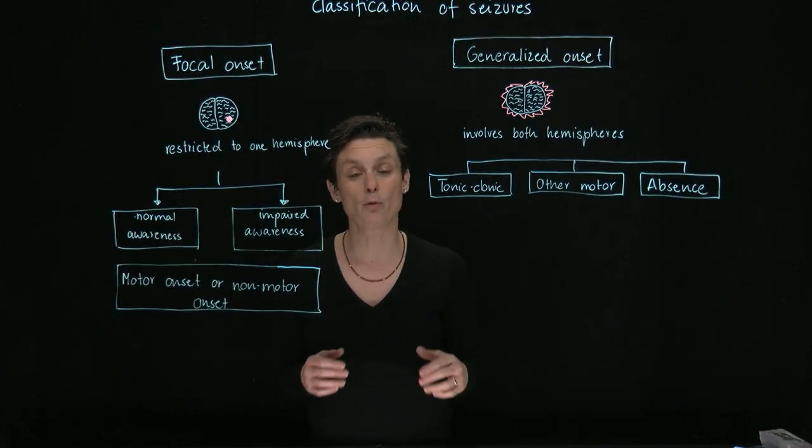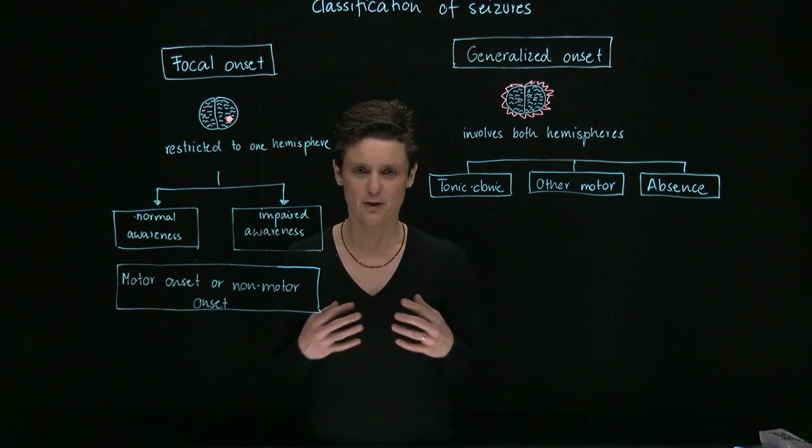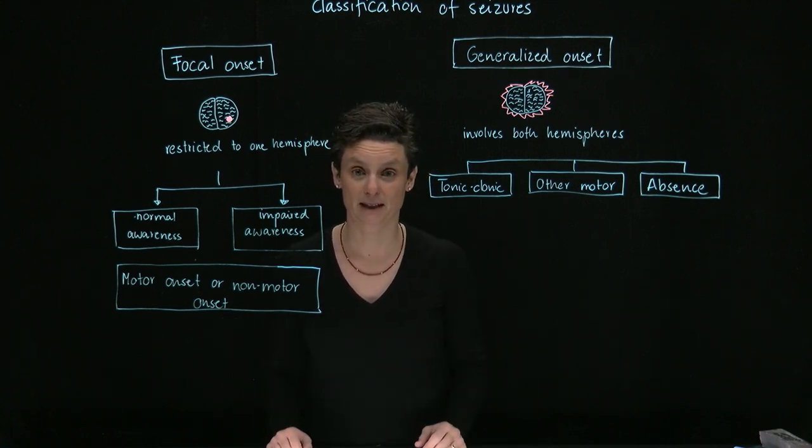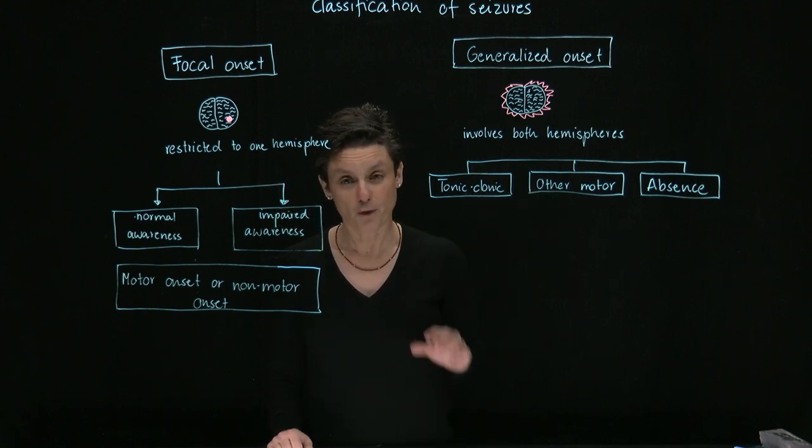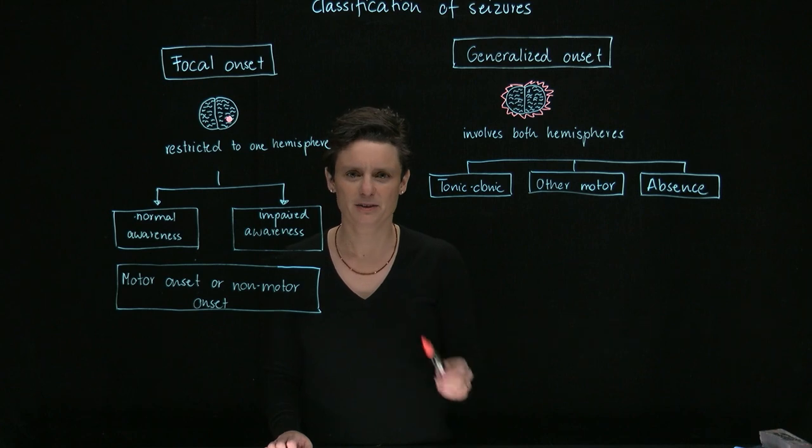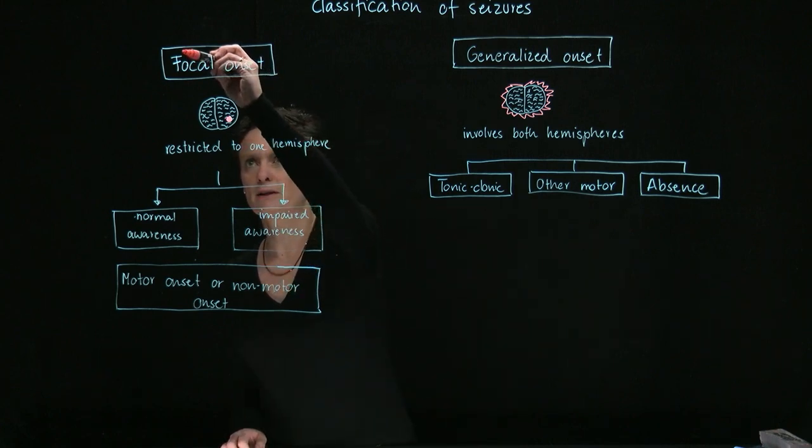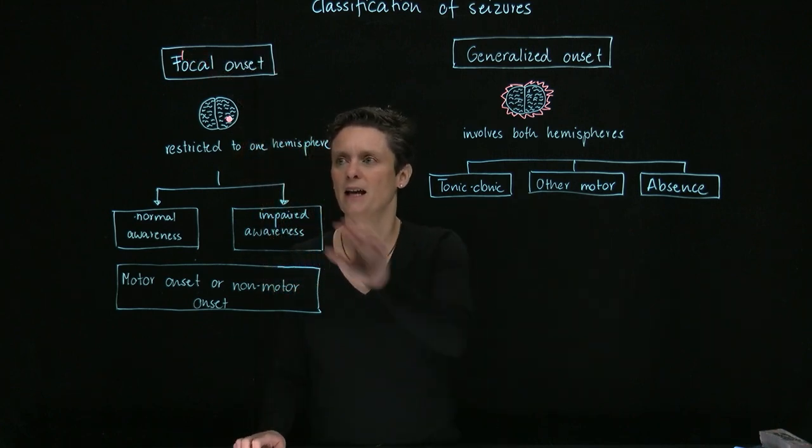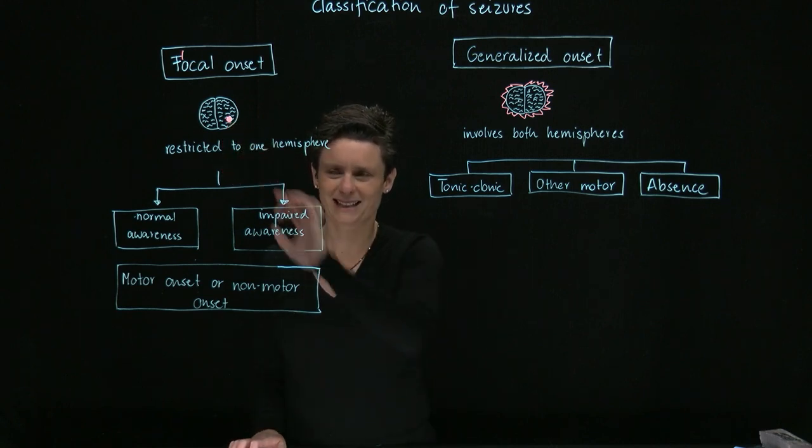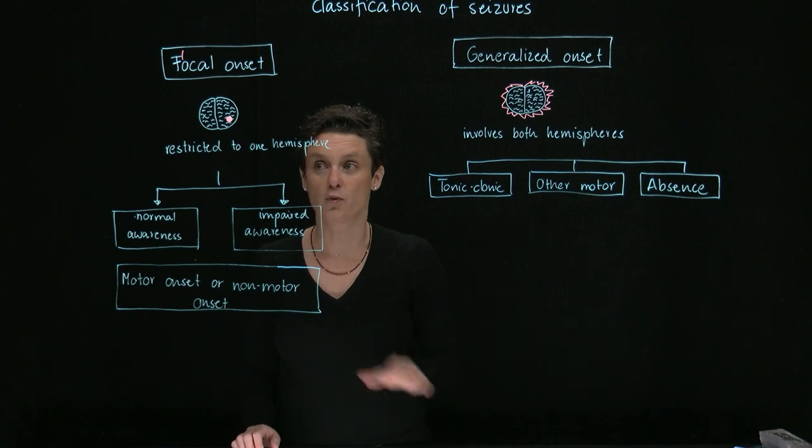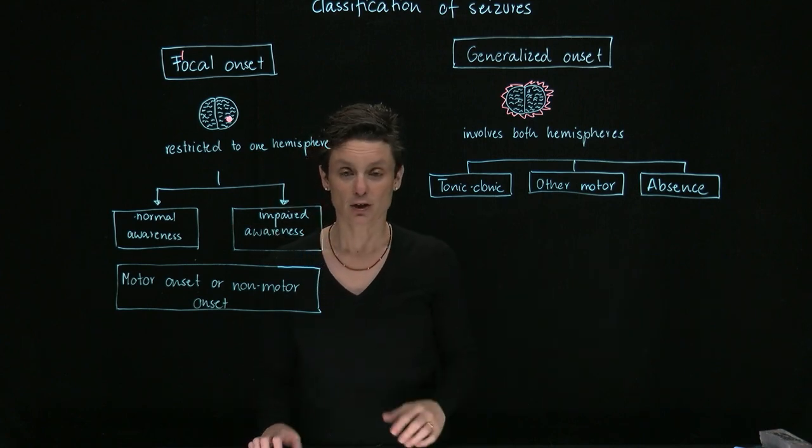So next discuss how we classify seizures. So first of all, we put it into two big buckets, focal onset and generalized onset. So focal onset means that we kind of stay locally, it's almost in the word, it's a local onset. So that means we are restricted to one hemisphere. So you can see this little dot here, so it's still restricted to one hemisphere.